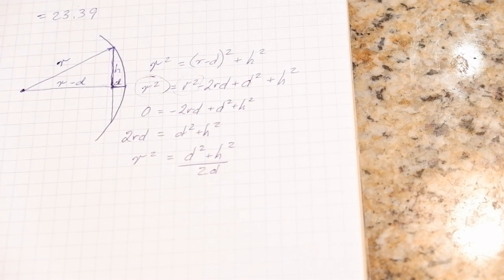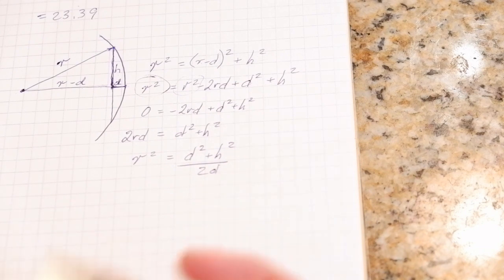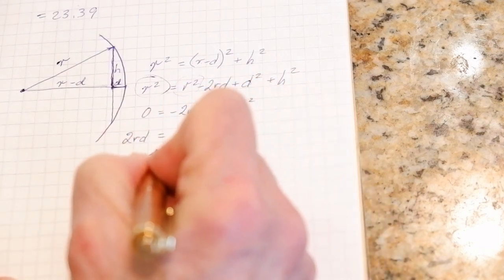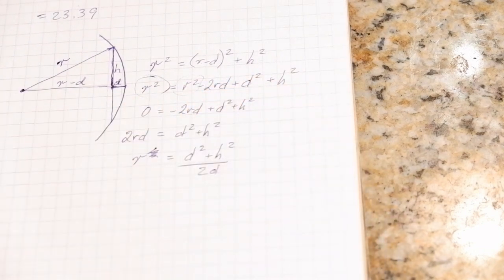R is equal to d squared plus h squared divided by 2d. So there it is, that's how we get the formula that tells us what the radius is. For example, where it's not r squared, it's r. R is equal to all of that. Good.